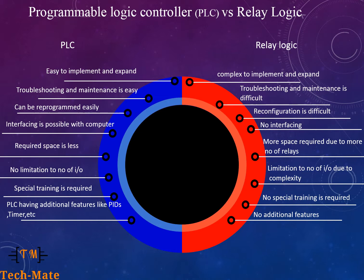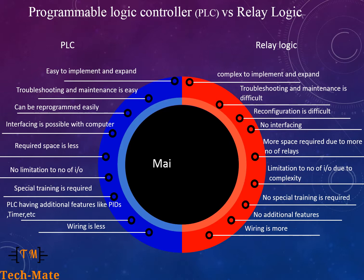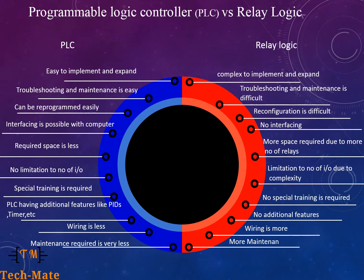Wiring: Very less wiring is required in PLC, while wiring required for Relay Logic is more. Required Maintenance: Overall maintenance is less in PLC, whereas maintenance is high in Relay Logic.